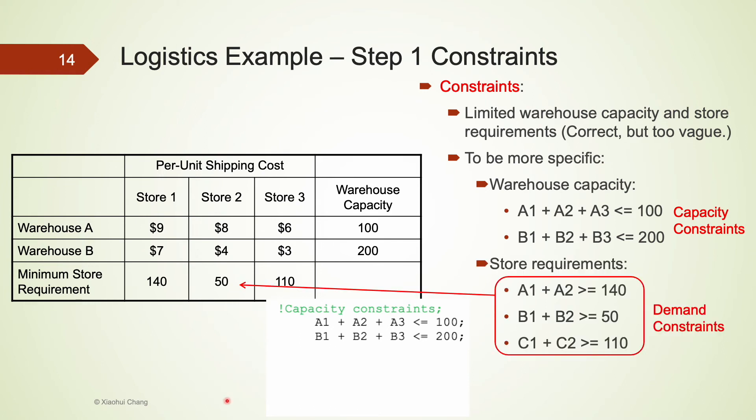Another set of constraints in a typical transportation problem is the demand constraint on the store side. Each store receives products from both warehouse A and B to meet its requirement. For example, store 1 receives A1 units from A and B1 units from B, so all together the total number of units received should meet its demand of 140 units. So we would need A1 plus B1 to be greater than or equal to 140. The same can be said for stores 2 and 3. Please pause the video now and examine the next two constraints.